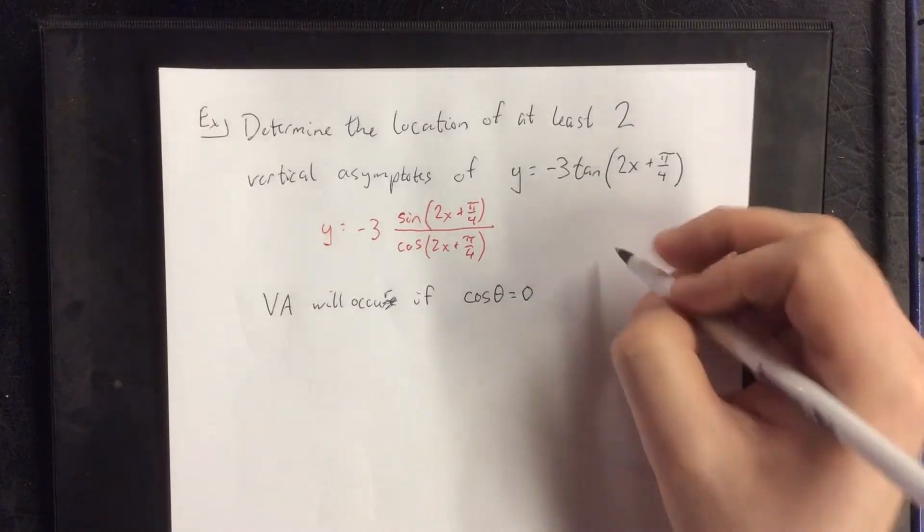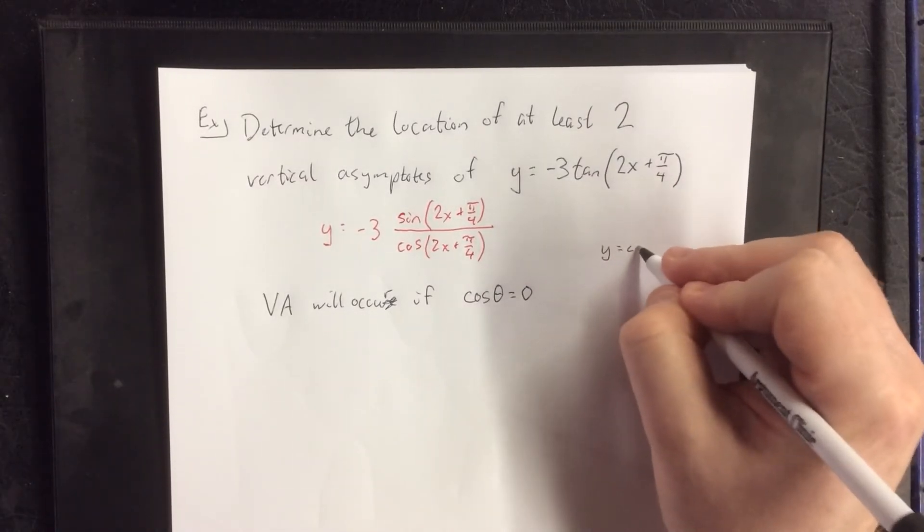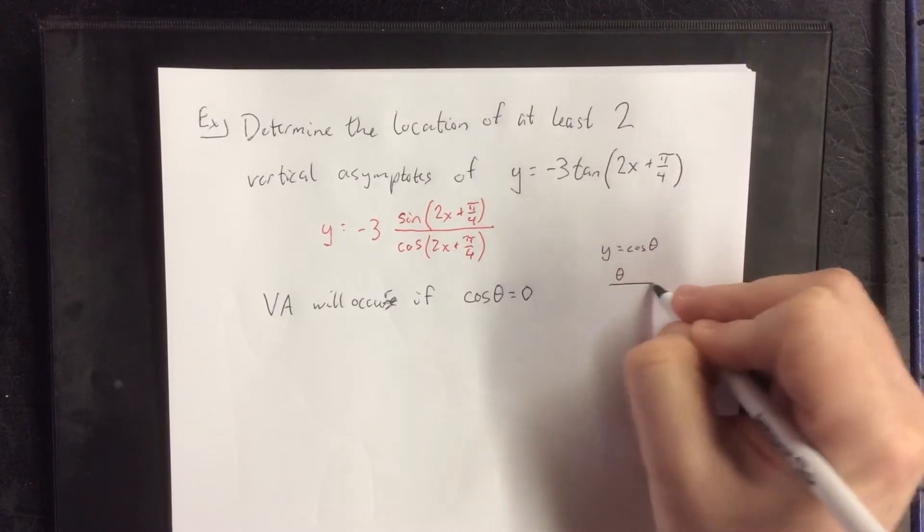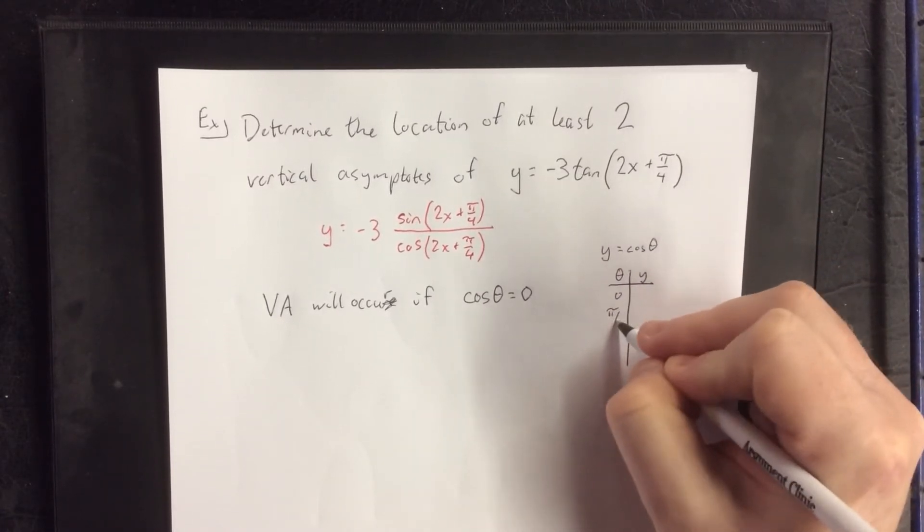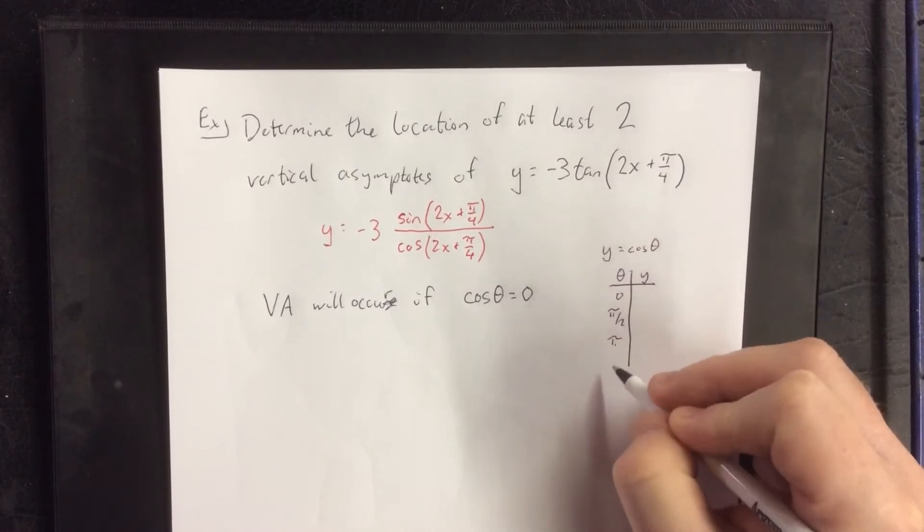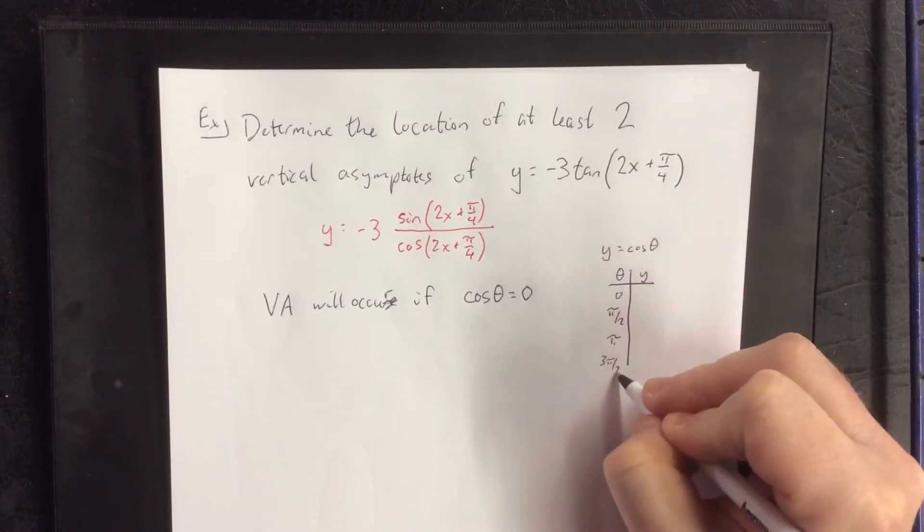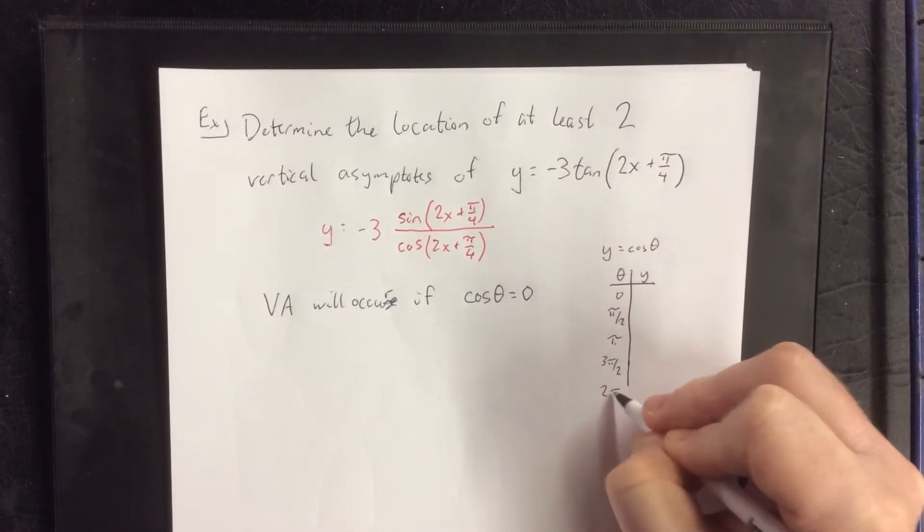If you think back to the mother function of y equals the cosine of theta, which theta values are going to give you a zero for the cosine?